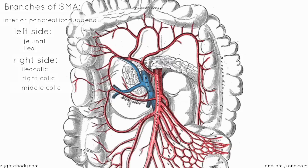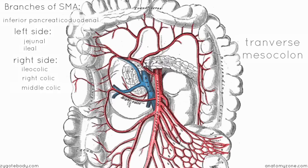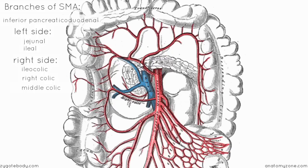The transverse colon is an intraperitoneal structure, so the branches of the middle colic artery pass into the transverse mesocolon, which wraps around the transverse colon and tethers it to the posterior abdominal wall. The right colic artery, however, supplies the ascending colon, which is a retroperitoneal structure, so it goes retroperitoneal. The middle colic artery works its way into the transverse mesocolon because the transverse colon is intraperitoneal.